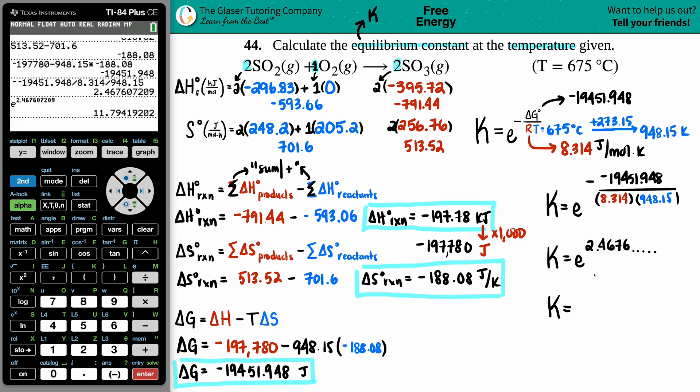Four sig figs here, so 11.79 - that is the final answer. No units for equilibrium constant. You can check yourself: if you have a spontaneous ΔG, which we do, our K value should be greater than one. It checks out.